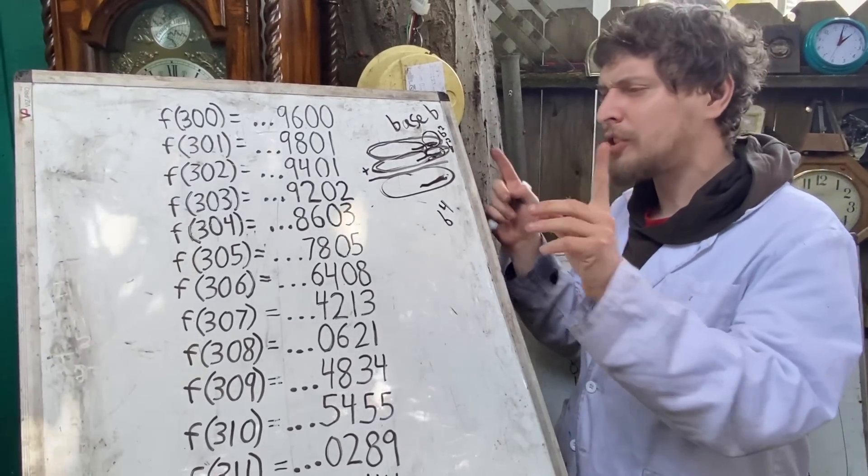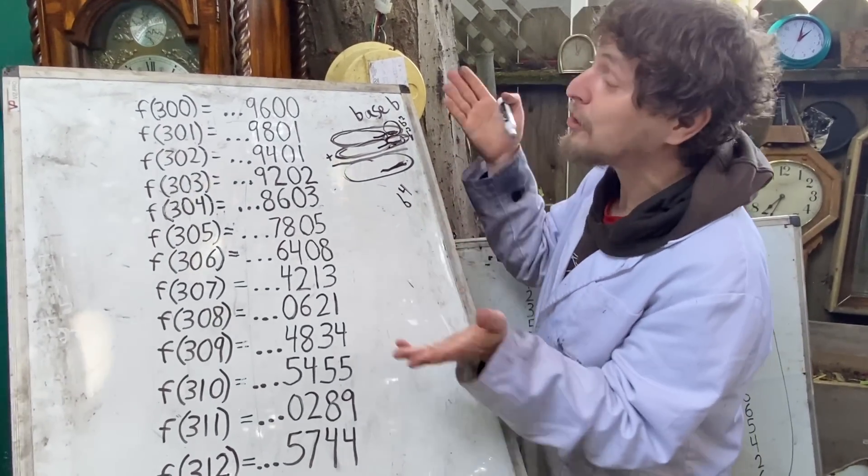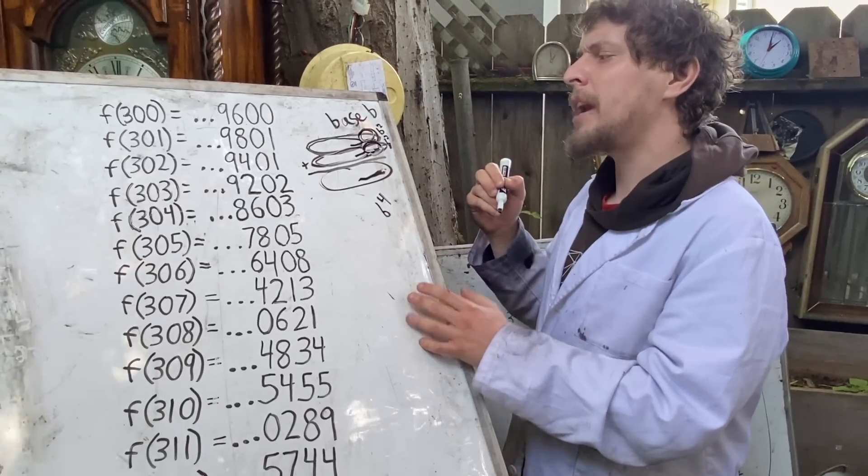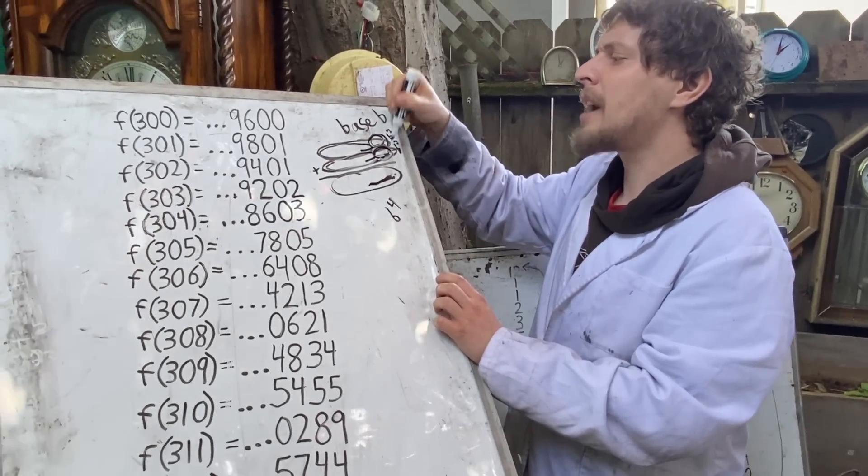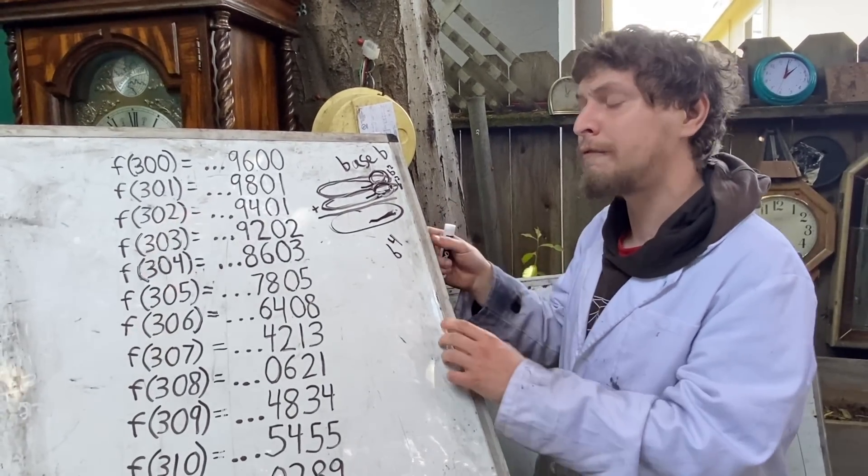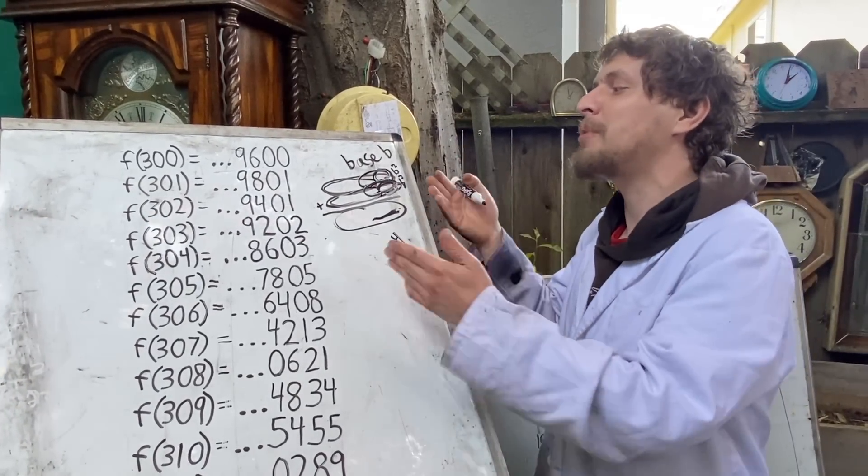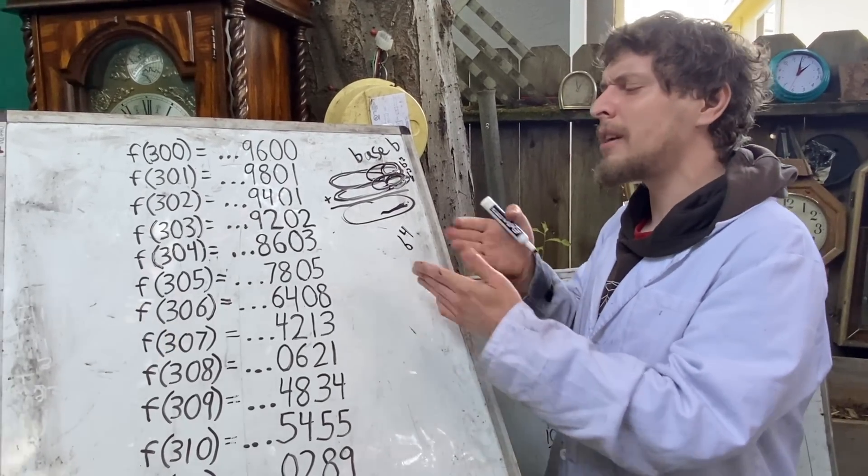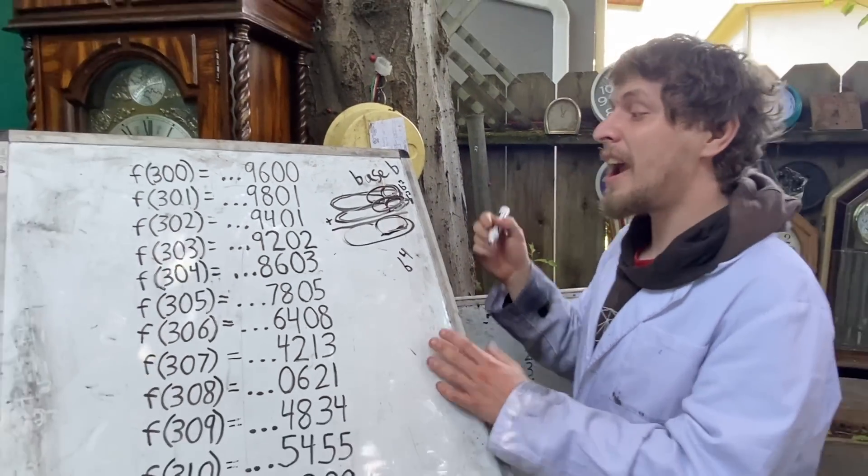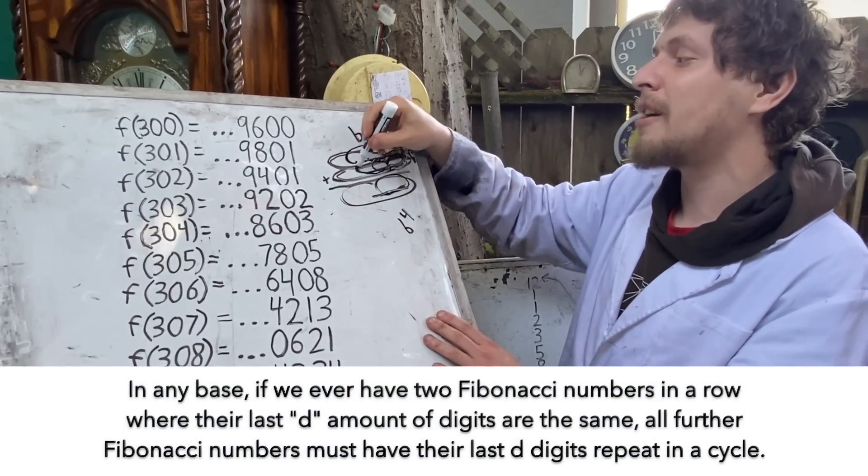And so at the most, and as we'll see, mathematicians have proven that the cycles aren't as big as these at the most's I'm going to show, but at the most, the last digit of a number in base B must follow B times B amount of possible options and must cycle after at most B squared Fibonacci numbers. The last two places are built off of B squared times B squared amount of options, making them cycle at B to the fourth power amount of Fibonacci numbers.